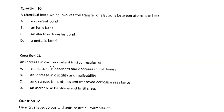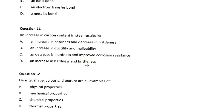A chemical bond which involves the transfer of electrons between atoms is called ionic bond. That's a good question. Covalent bonds share electrons. And in metallic bonds, we have positively charged ions surrounded by a cloud or a sea of electrons, delocalized electrons they often talk about. An increase in carbon content in steel results in an increase in hardness and brittleness.